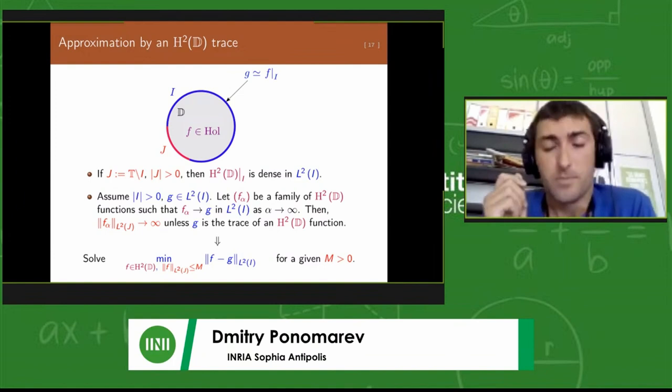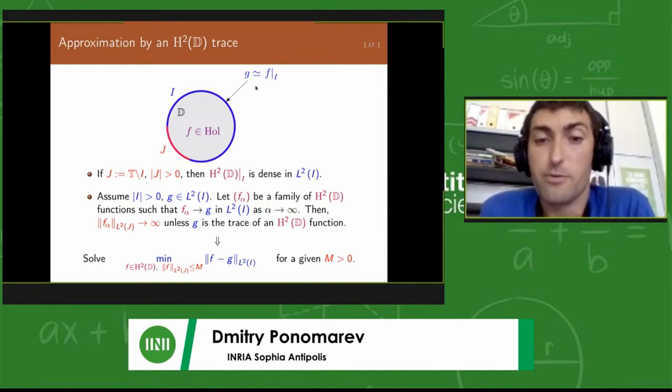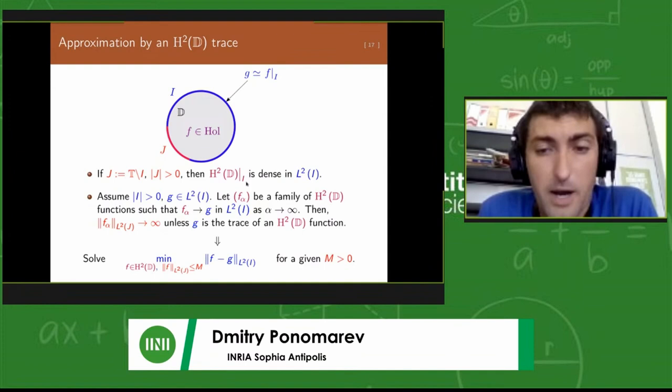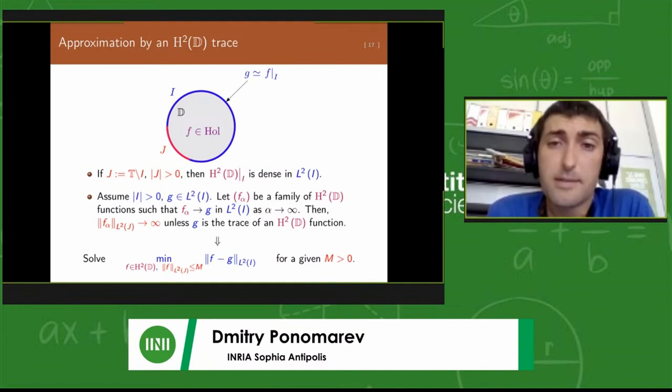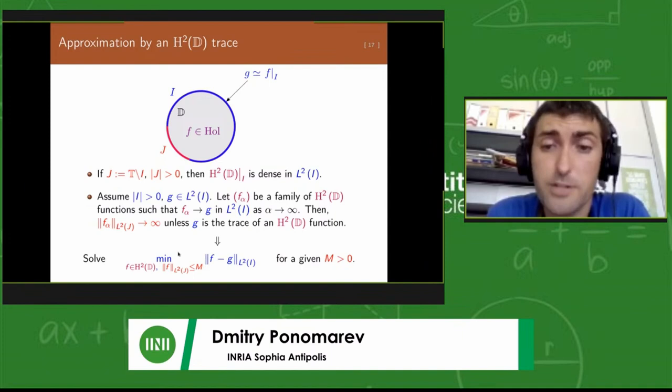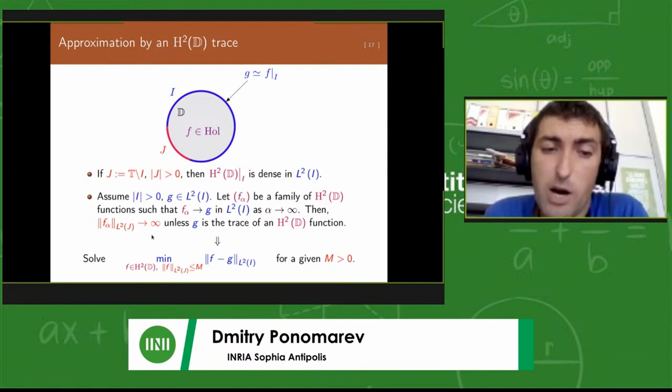The simplest case would be the Hardy space H2, which is the space of holomorphic functions whose integrals over circles remain bounded all the way to the boundary. Such functions have boundary values almost everywhere, non-tangential limits, and can be identified with a subspace of the square integrable functions on the circle.